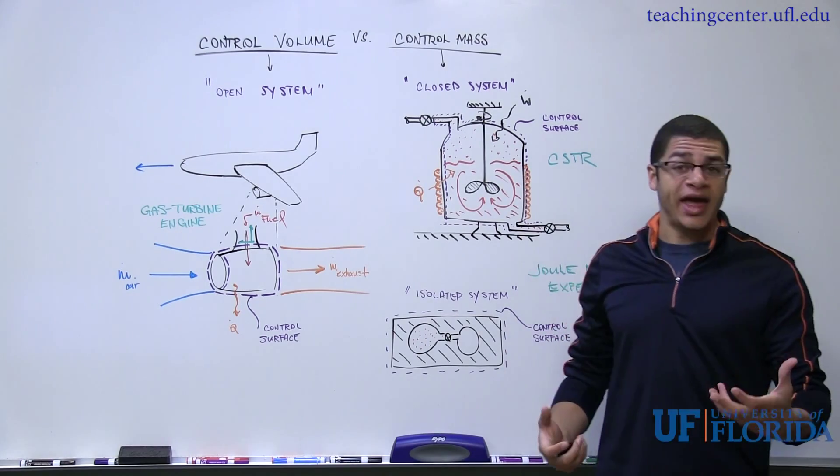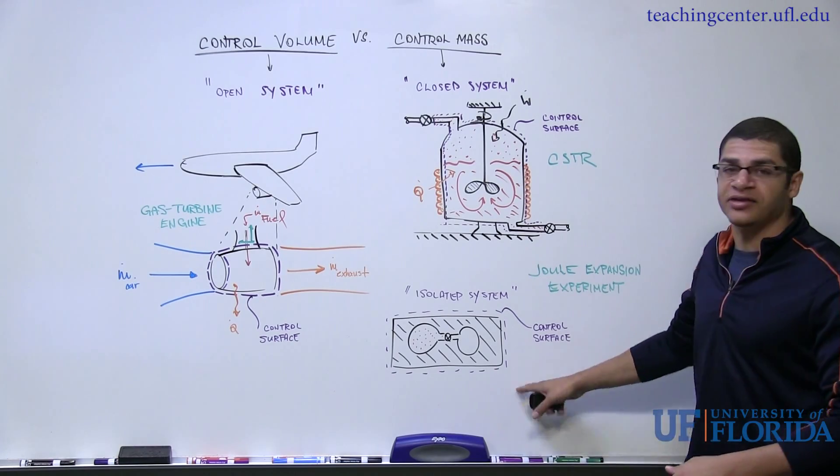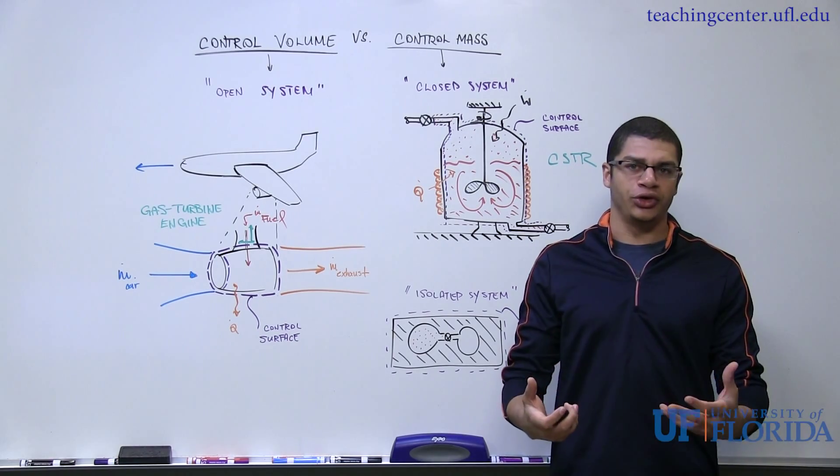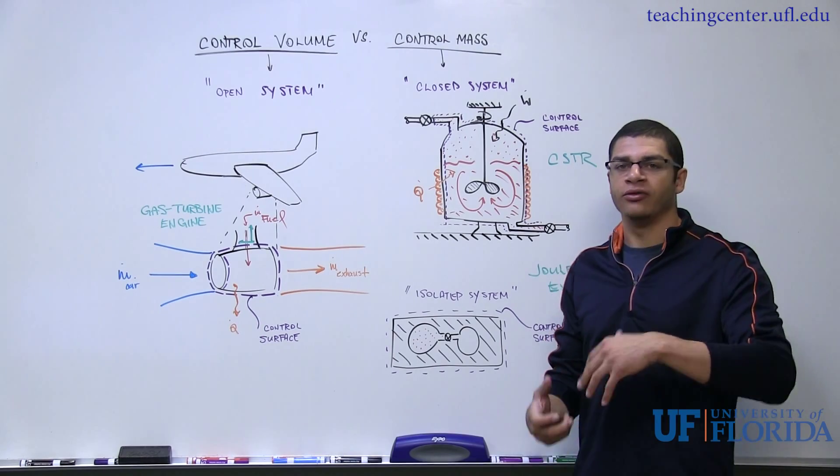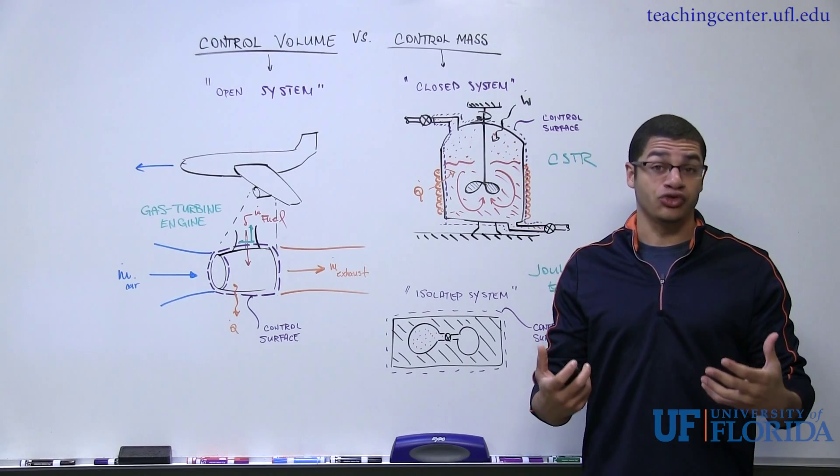A special case of a control mass or closed system is an isolated system, and I'm going to start here first and then move my way all the way back to a control volume, which has the least amount of constraints.